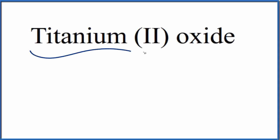To write the formula for titanium (II) oxide, let's first write the element symbol for titanium, that's just Ti. And this Roman numeral II in parentheses, that means it's 2 plus.